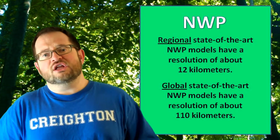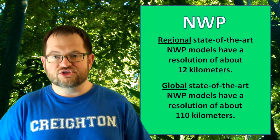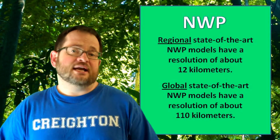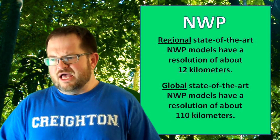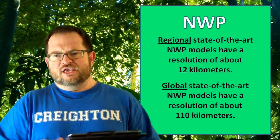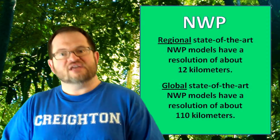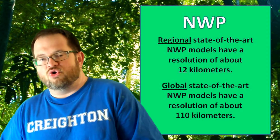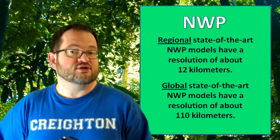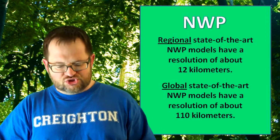In contrast, the current global state-of-the-art numerical weather prediction models have a resolution of about 110 kilometers. They're covering the whole world, but if something going on in Asia is what's going to be affecting the weather in Omaha in the next couple of days, this is good — you have a global model and you can see that weather system. On the other hand, it does not have very good resolution.